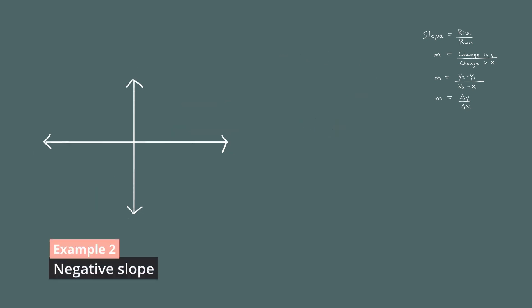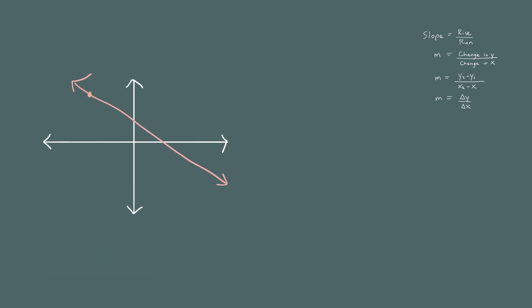Next we're going to compute the slope of a line with a negative slope. Let me highlight two points on this line: the point on the left has coordinates (-3, 2), and the point on the right has coordinates (4, -1). The slope should be negative, so if we don't get a negative number we know we made an error. The slope is the change in y over the change in x.